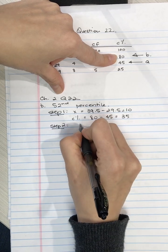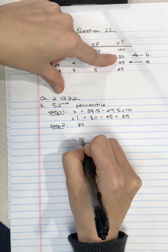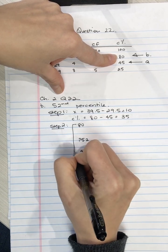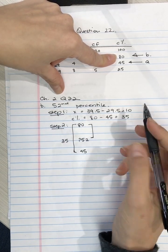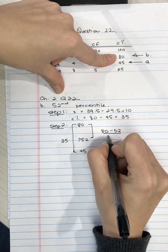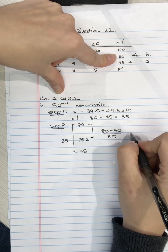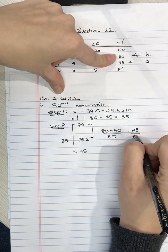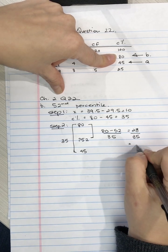Step 2, we need to find how far into this interval is the 52nd percentile from the top. So we have 80 at the top, we have 45 at the bottom, and our question is where is 52. So this whole piece is 35 units. How far proportionally is 52 from 80? So we're going to take 80 subtract 52 and divide by 35.